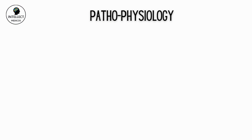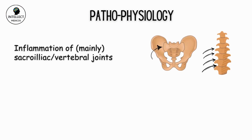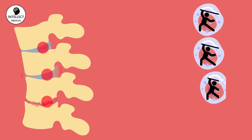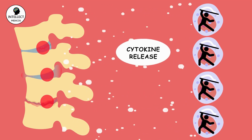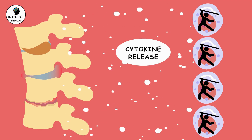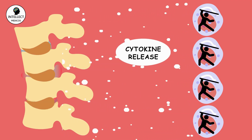First, let's understand its pathophysiology. Ankylosing spondylitis is the inflammation of joints, mainly the sacroiliac and vertebral. This inflammation, thought to be due to autoimmune mechanism, causes destruction by release of cytokines. This leads to fibrosis and later on ossification of the affected joints.